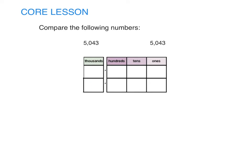Let's compare 5,043 and 5,043 by writing each digit in the place value chart. Five thousands, no hundreds, four tens, and three ones. Five thousands, no hundreds, four tens, and three ones. Say what?